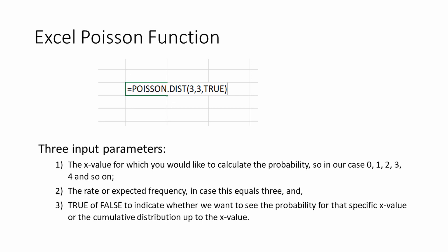The Excel Poisson function calls for the following inputs: 1. The x-value for which you would like to calculate the probability — so in our case 0, 1, 2, 3, 4, and so on. 2. The rate or expected frequency, which in this case equals 3. And 3. True or false, to indicate whether we want to see the probability for that specific x-value or the cumulative distribution up to the x-value. However, there is no inverse Poisson function available in Excel.